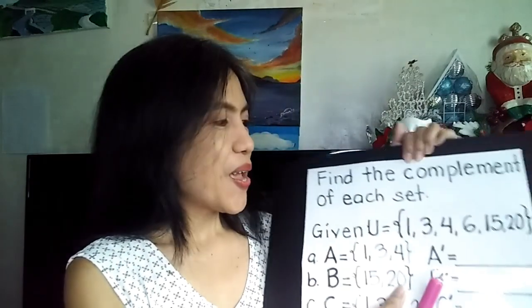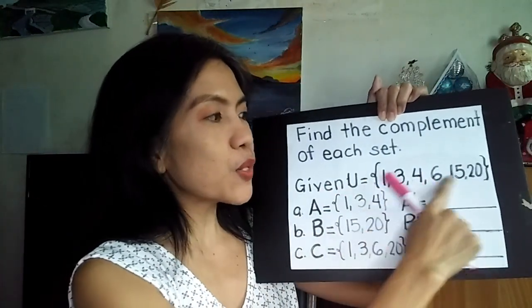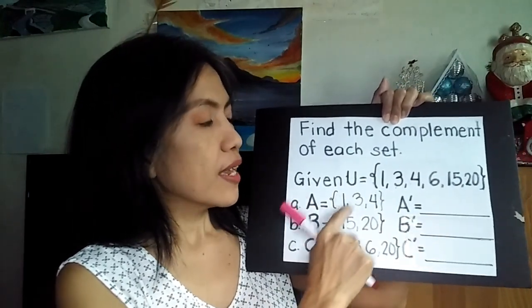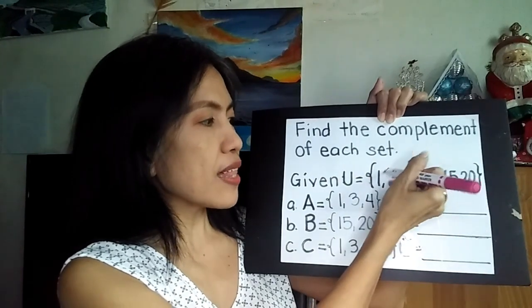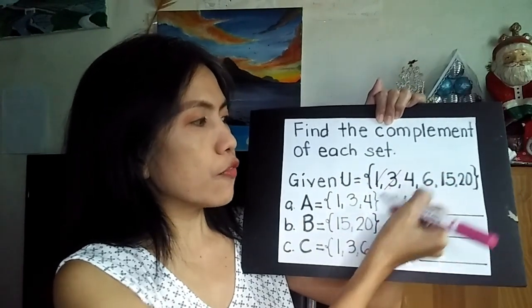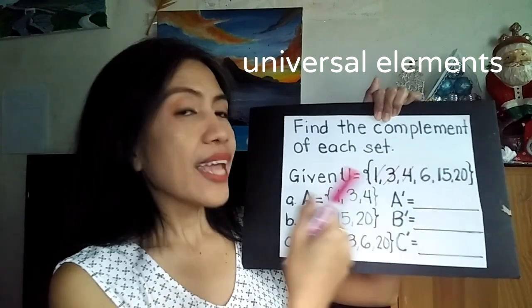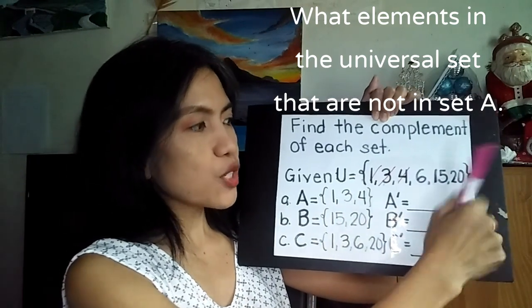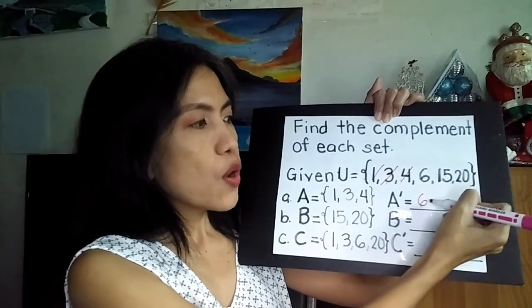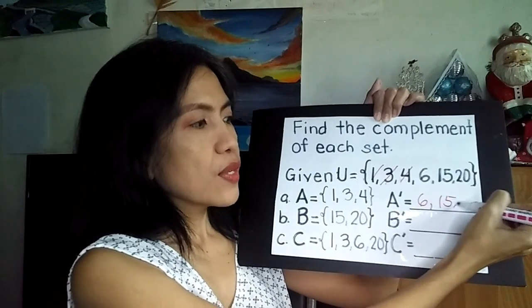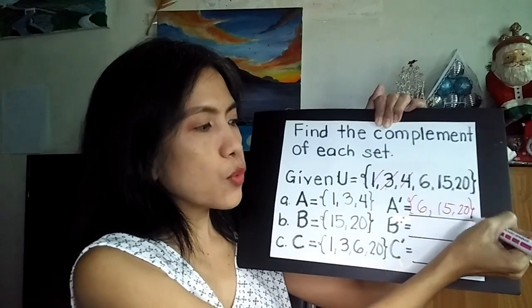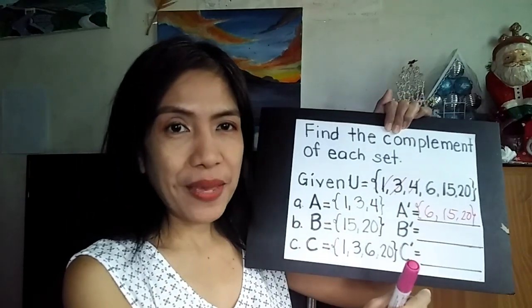Let's answer this one. So what elements are there in the universal set that are not in set A? We have 1 — it's there in the universal. We have 3, it's there in the universal. We have 4, it's there in the universal. And now, what is not in this set that is here? So we have 6, 15, and 20. The numbers that are not crossed out — those are our A complement.